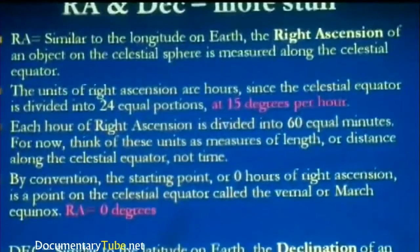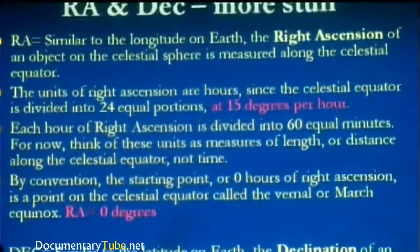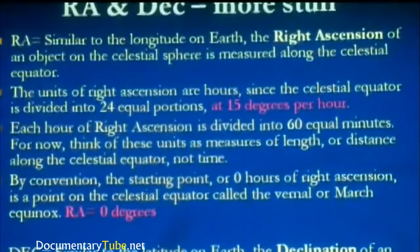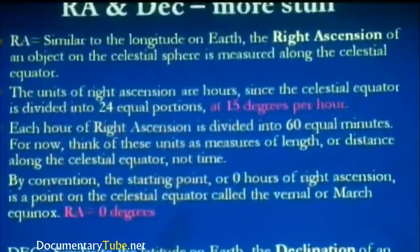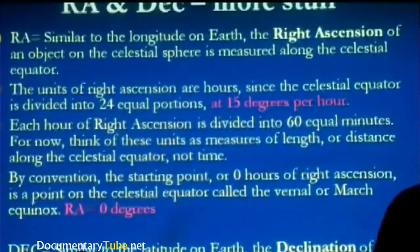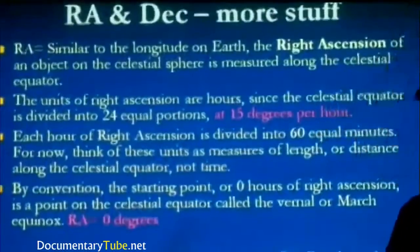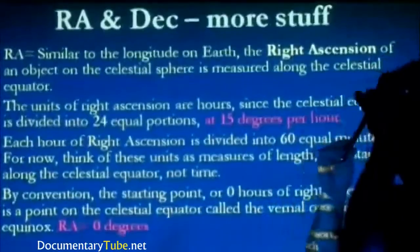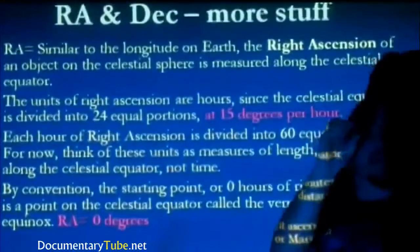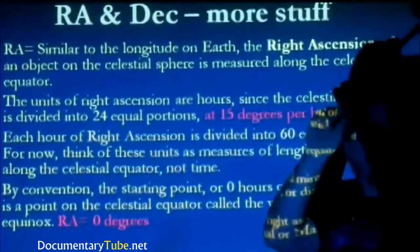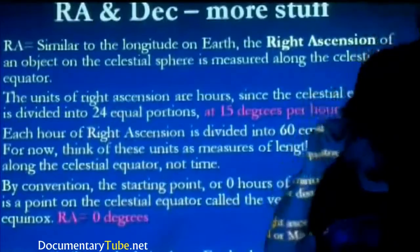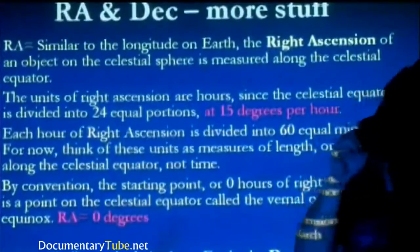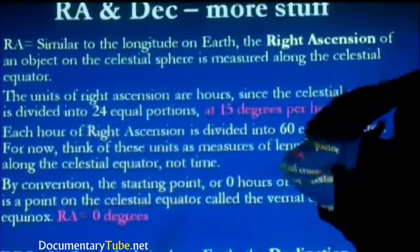Each hour of right ascension is divided into 60 equal minutes. Think of these units as measures of length or distance along the celestial equator, not time. When we talk about an hour of right ascension, we don't mean looking at your watch for an hour — we're talking about 15 degrees. Inside those 15 degrees, you have 60 equal minutes. By convention, the starting point — zero hours of right ascension — is a point on the celestial equator called the Vernal or March Equinox.